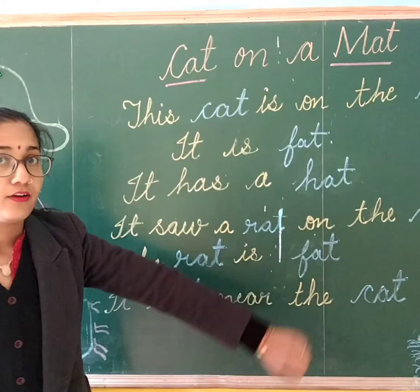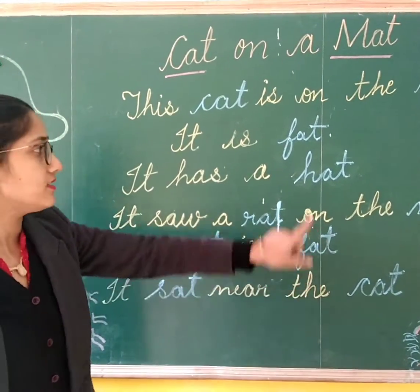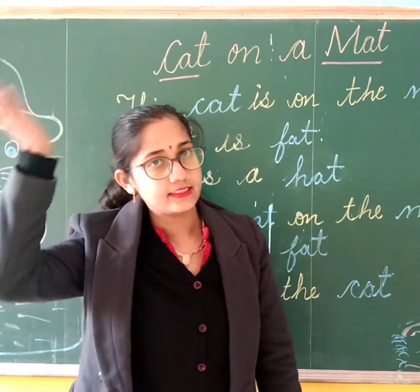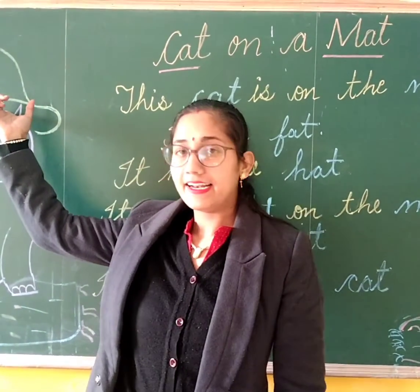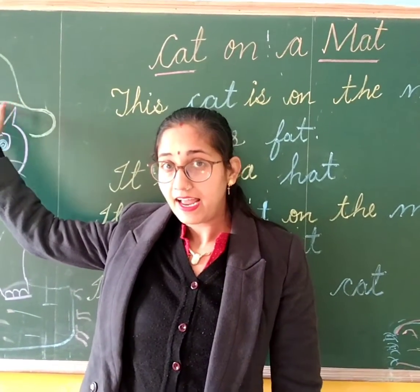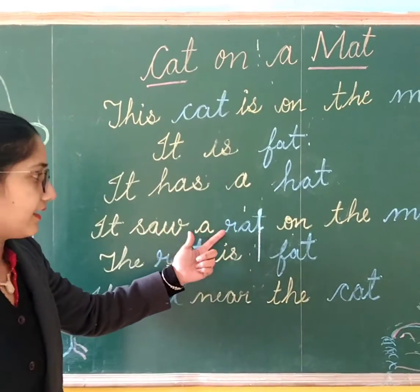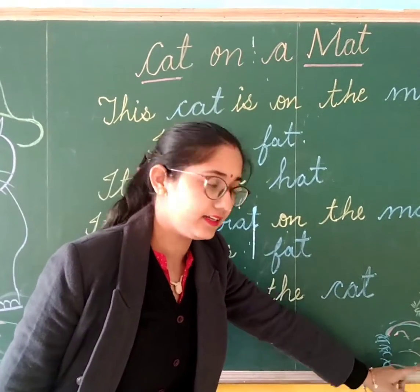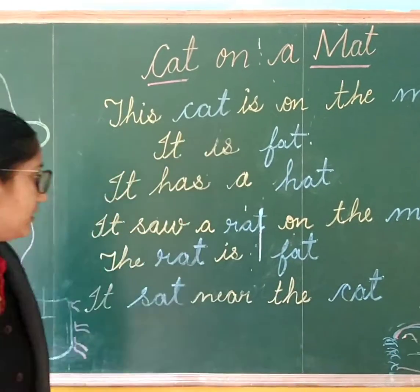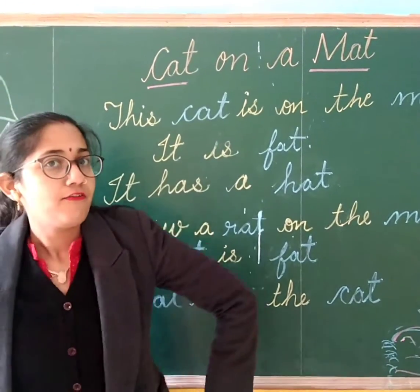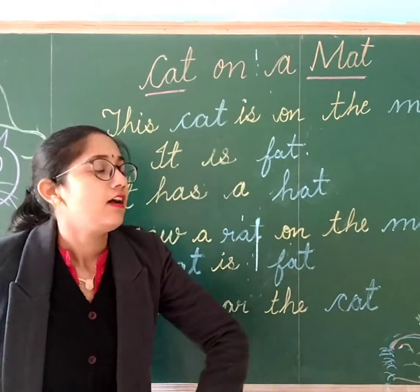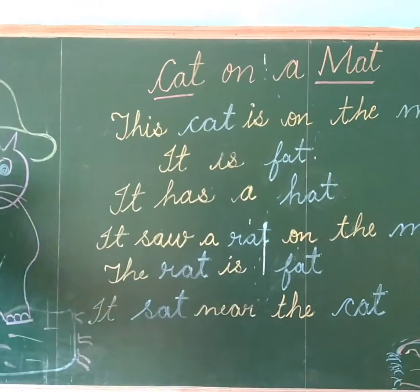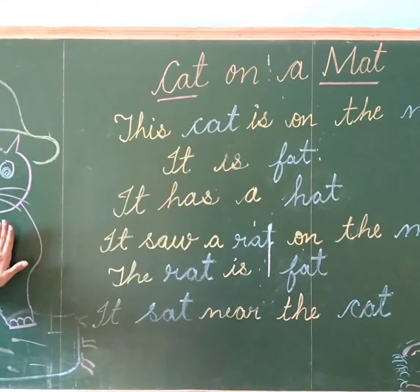It is fat. It has a hat. It has a rat on the mat. The rat is fat. It has a cat and a rat on the mat.